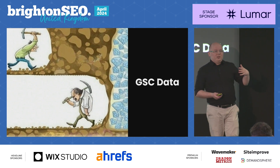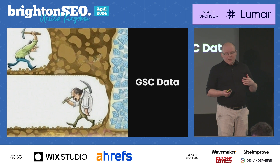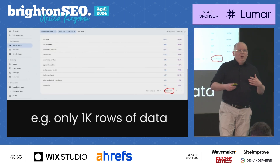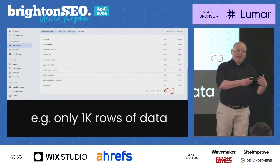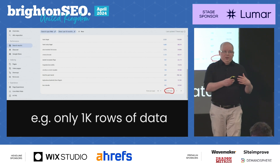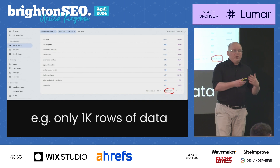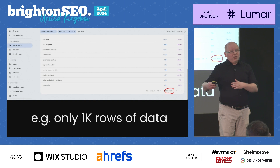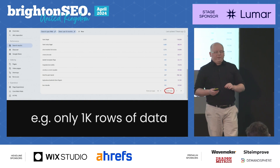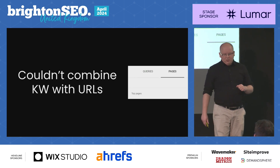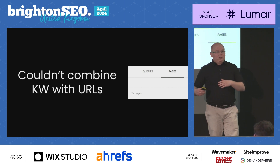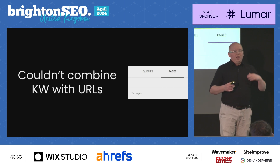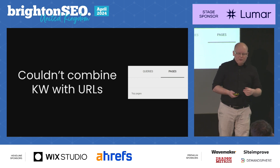The UI of Search Console has some limitations. For example, you can't see or export more than 1,000 rows of data. So if you have a bigger website or an e-commerce platform and you appear in search results on more than 1,000 keywords, it could not be enough. Another limitation is that you can't combine keywords and URLs — you must check it manually one by one, which is time-consuming.